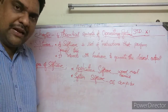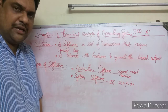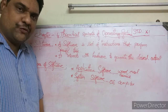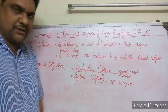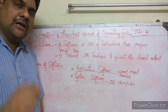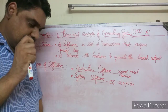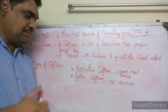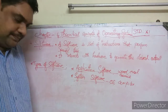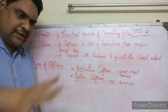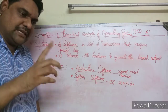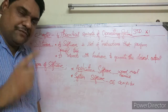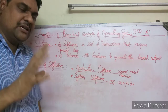Without system software, the system will not work. System software is what allows the computer to interact and function. For example, when you open Word, type something, save it, and print — the Word application communicates with the printer through the system software.